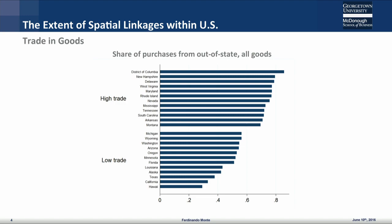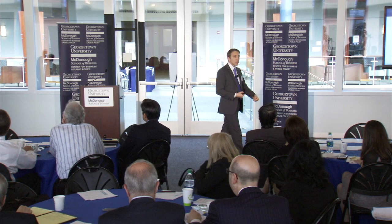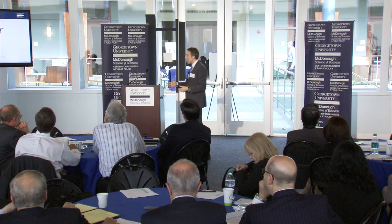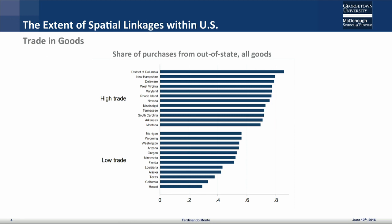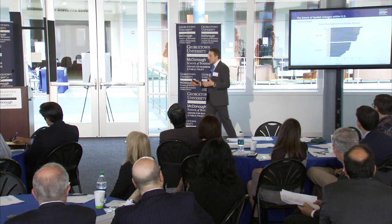A simple way of understanding how much spatial linkages matter for trading goods is to take a U.S. state, take all the expenditure on tradable goods by firms and consumers, and ask how much of that expenditure falls on stuff that is produced out of state. If that number is very high, then the spatial linkages are very strong; if that number is very low, they're not so important. The high-trade states are D.C., New Hampshire, Maryland, Delaware — in these states most of what's consumed is coming from somewhere else. And there are some low-trade states like Texas and California, where a lot of stuff is produced, so the share of expenditure that falls outside is relatively small.